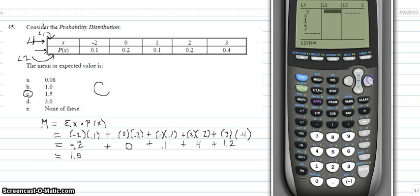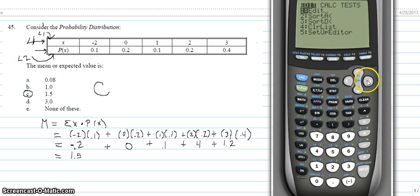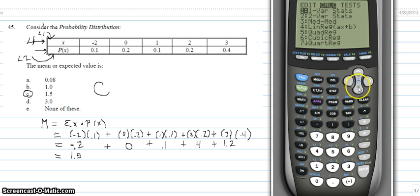So, to get to L2, we just arrow over. That's going to be 0.1, 0.2, 0.1, 0.2, and 0.4. Okay, now that we have our information entered, we need to go to stat, arrow over to calc, and arrow down to two var stats, and hit enter.